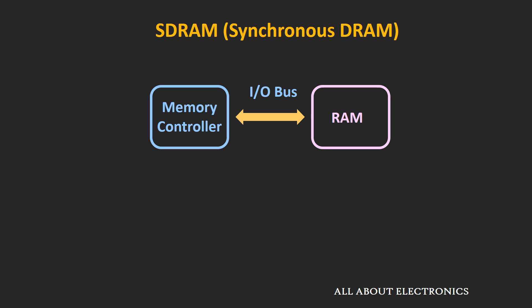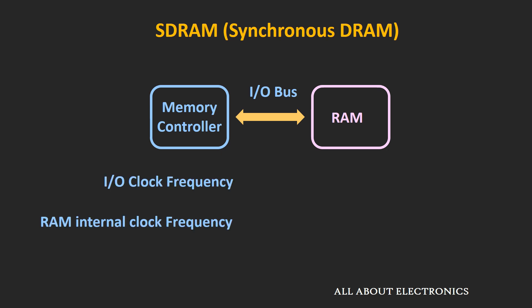Before we understand more about this RAM, let's see the different terminologies used with dynamic RAM. There are two types of frequencies: the input-output clock frequency and the RAM internal clock frequency. The IO clock frequency is the frequency at which data is transferred between the RAM and the memory controller, while the internal clock frequency is used for internal operations. In synchronous DRAM, these two frequencies are the same.